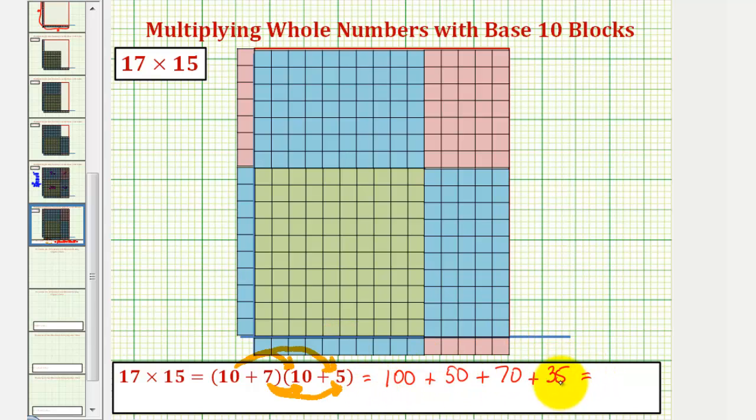The sum of our partial products, once again is 255, again the product of 15 and 17, but if we compare this to our rectangle,